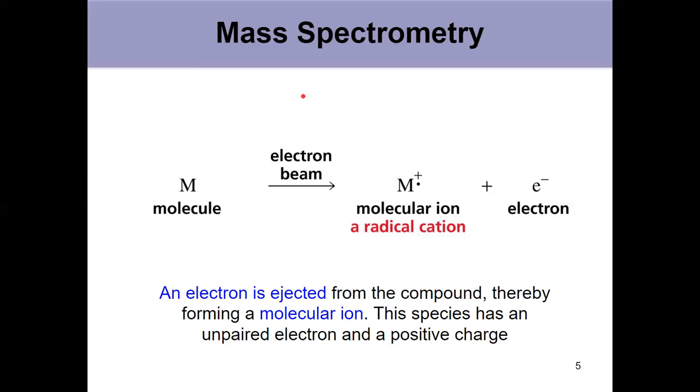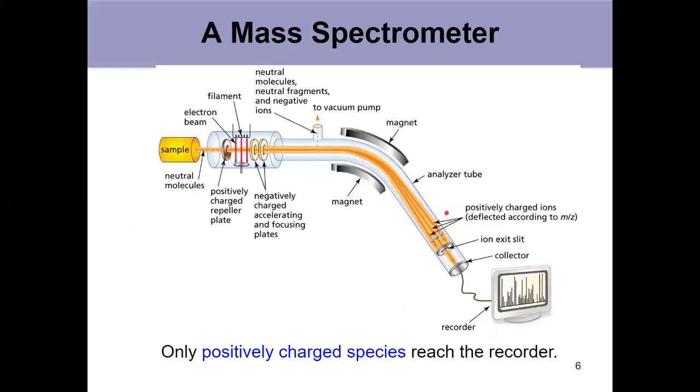One thing to take away from here: we are just kicking off one electron. The electron has been ejected from the initial compound and it forms a molecular ion. That has an unpaired electron and a positive charge overall, the molecular ion.